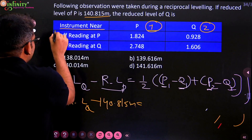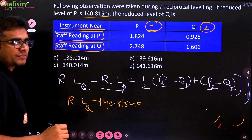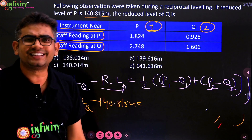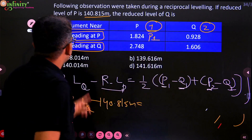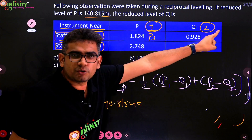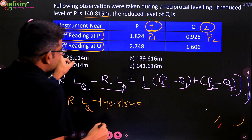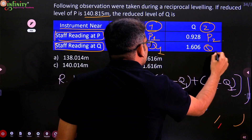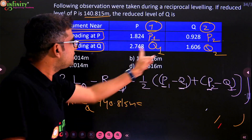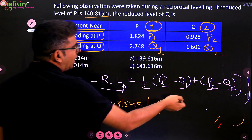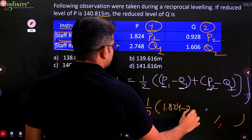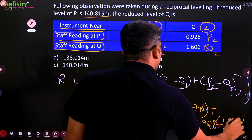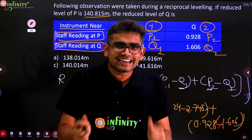So once you identify the instrument positions, the staff readings follow. Staff reading at P from instrument position one is P1. Staff reading at P from instrument position two is P2. Staff reading at Q from instrument position one is Q1. Staff reading at Q from instrument position two is Q2. Now simply substitute in the formula: P1 minus Q1 is 1.824 minus 2.748, plus P2 minus Q2 is 0.928 minus 1.606. Substitute these values and you will get the answer.